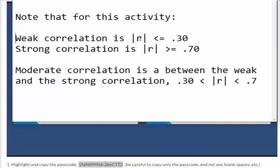So if you have a negative 0.29 you treat it as a positive 0.29, and since 0.29 is less than or equal to 0.3, that would be a weak correlation.